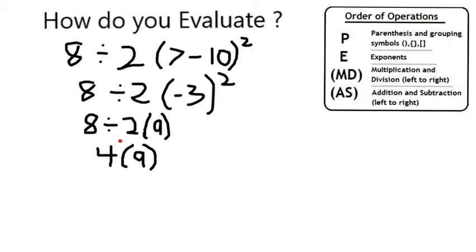8 divided by 2, of course, is 4, so now I get 4 times 9, or 36. So my original convoluted expression at the top was just equal to 36.